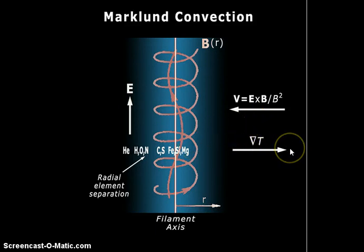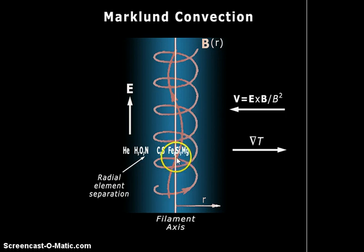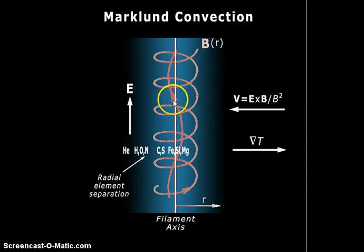Temperature increases as you go outwards, so the coolest region is in the center of the star and the hotter regions are outward — which is backwards from establishment science. In establishment science, young stars are hottest in their interior and coldest on their surface, which is wrong. They're actually coolest in their interiors, where the material is undergoing Markland convection and falling towards the central filamentary axis.